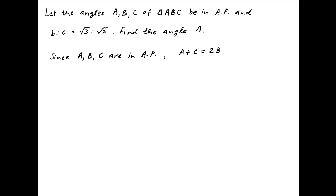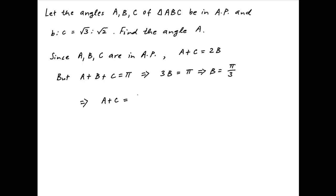Since ABC are angles of a triangle, therefore A plus B plus C is equal to pi. Replacing A plus C with 2B, we get 3B is equal to pi, or B is equal to pi upon 3. Therefore, A plus C is equal to 2B, or 2pi upon 3.